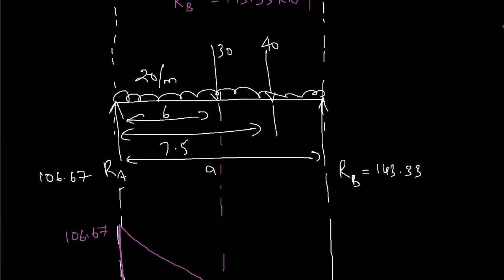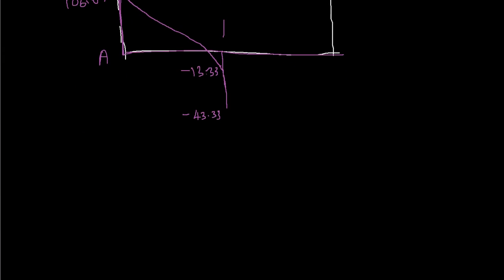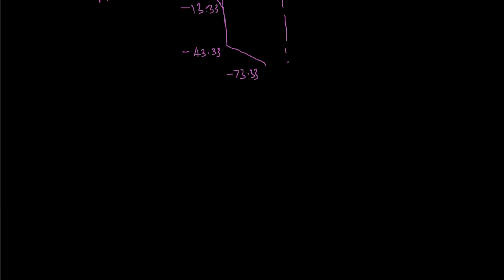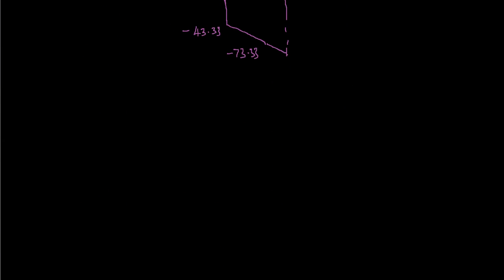From 6 to 7.5 meters there is another 1.5 meters of UDL at 20 kN/m, adding 30 kN downward. So the shear force continues as a straight line down to minus 43.33 minus 30, giving minus 73.33 kN. Then at 7.5 meters the 40 kN point load acts, dropping the shear force further to minus 143.33 kN.